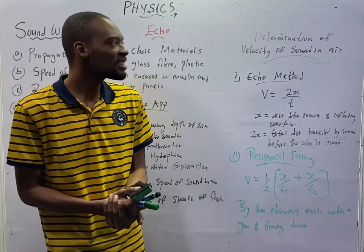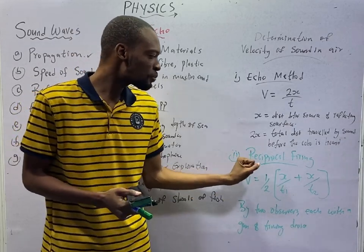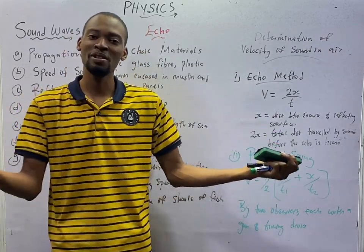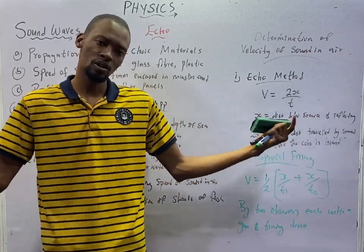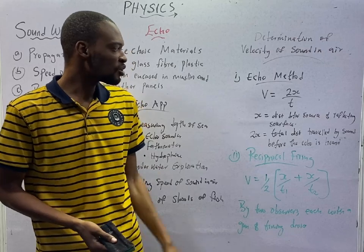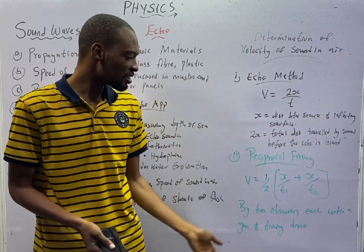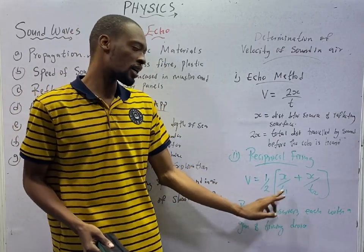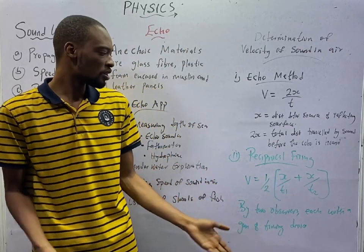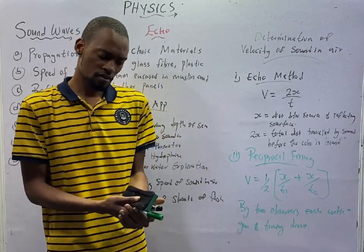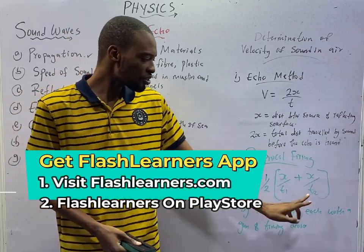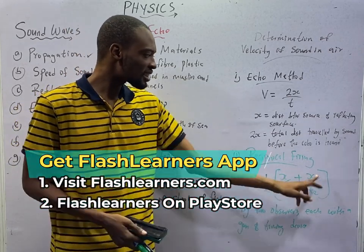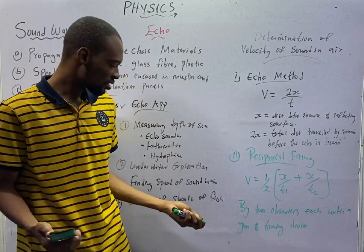The second method of finding the velocity of sound in air is the reciprocal firing. Here we have two observers, each with a gun and a timing device, trying to find the velocity of sound in air. In this case, the formula is not 2S over T, rather it is V equals one-half, brackets open, S over T1 plus S over T2. Time T1 is the time recorded by the first observer, T2 is the time recorded by the second observer, and S is the distance between the source and reflecting surface.